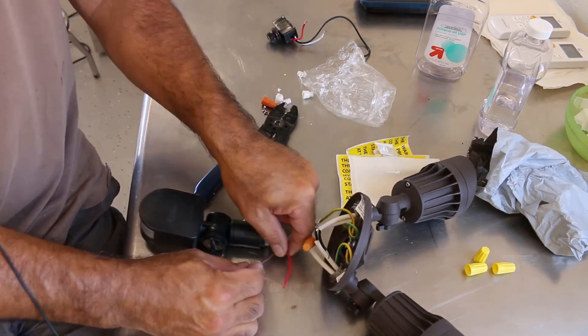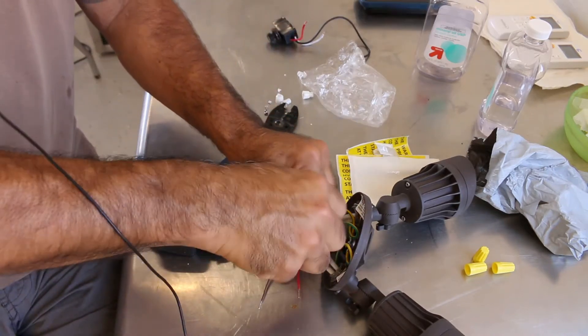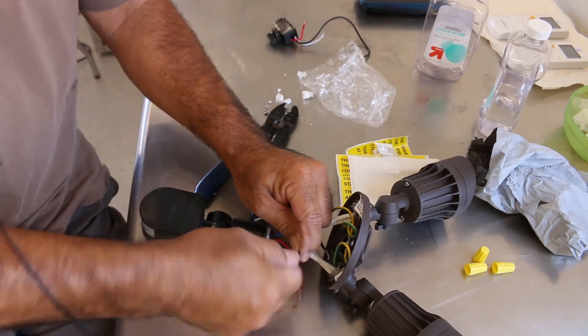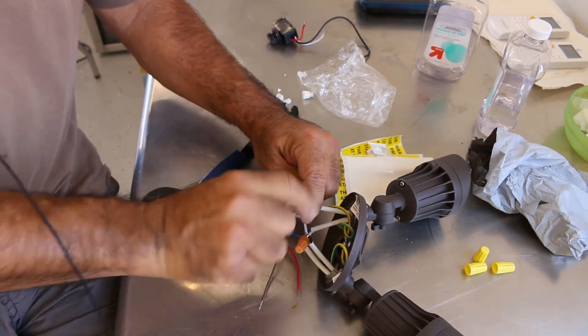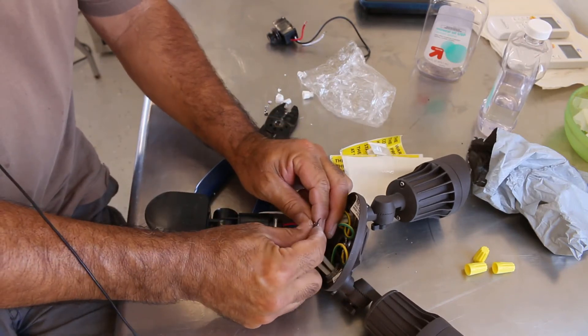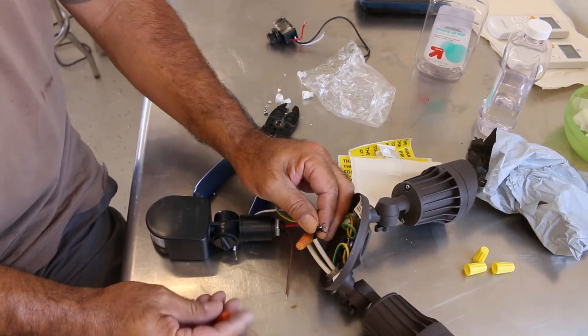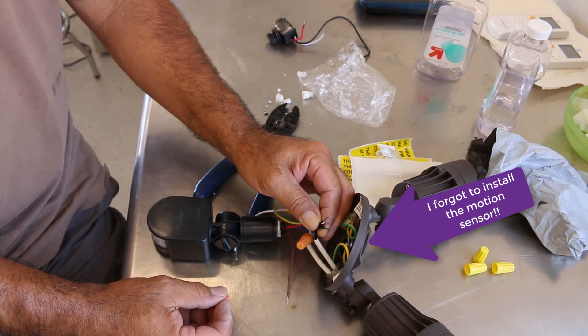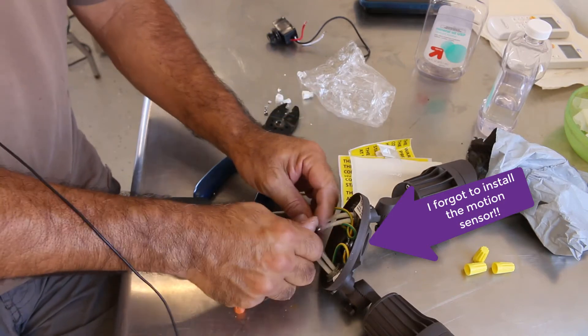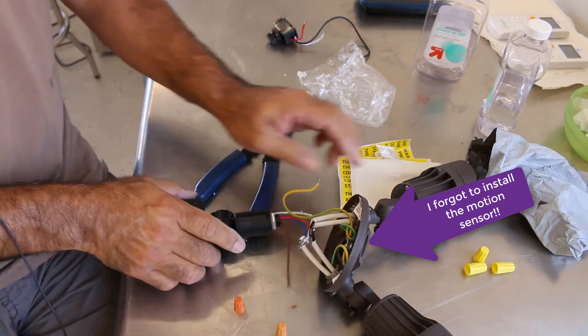This is our ground. And now we have red. If you recall, red is going to go to the black. Each light has a black wire that's your hot. So we're going to connect the red and the black together. Now, what did I do? I'm premature. Not in that way. Take it easy, people. Calm down.